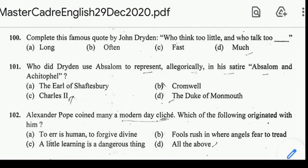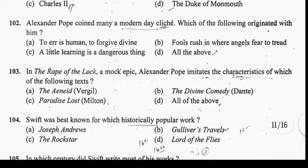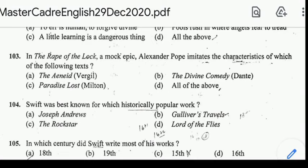Number 102: Alexander Pope coined many modern-day phrases. Which of the following originated with him? Correct answer: option D, all of the above. Number 103: in The Rape of the Lock, a mock epic, Alexander Pope imitates the characteristics of which? Correct answer: option D, all of the above — all characteristics are included in The Rape of the Lock.